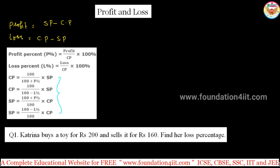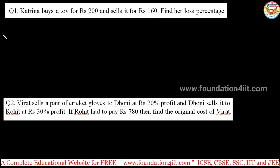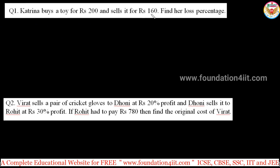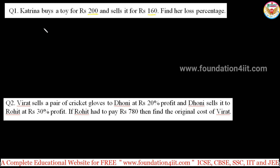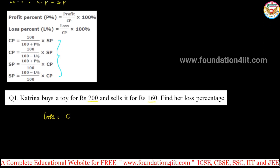Along with this, I'll explain some shortcut tricks. We'll start with two easy questions from school-level topics, then go for the short formulas and tricks. First question: Katrina buys a toy for 200 and sells it for 160. This is the cost price and selling price. Find the loss percentage.